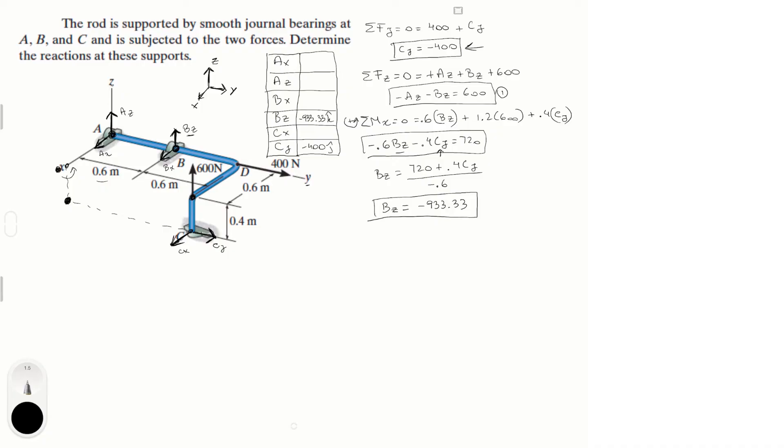We have BZ so we can plug it into equation one. Let's plug it into equation one and solve for AZ, and we're going to get that AZ is equal to 333.33 in the k direction. So it's positive. Let's put 333.33 in the k.